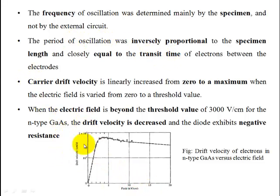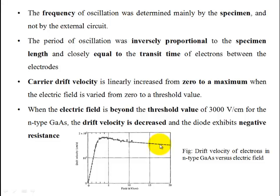We apply an electric field across the specimen and plot the drift velocity — carrier velocity — against the field. As the electric field increases, the carrier velocity reaches a maximum value. Beyond the threshold value, the drift velocity decreases. This means the mobility decreases and the current decreases, which means it exhibits a negative resistance.